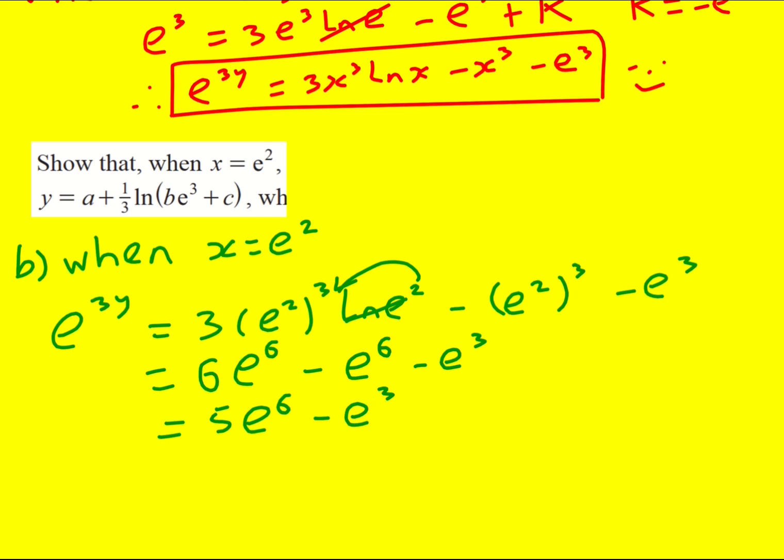Remember this is e to the 3y. So now I want to get it just in terms of y. There's two ways to think about this. We can either do ln of both sides, or if you're happy with logs you can just see that 3y is going to equal ln of 5 e to the 6 minus e cubed. It's going from exponential form to log form. But I think it's quite a good plan to just take logs of both sides.